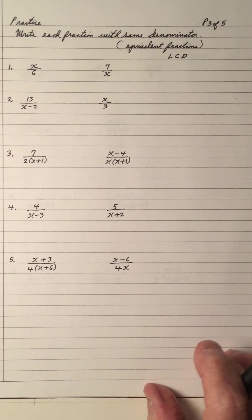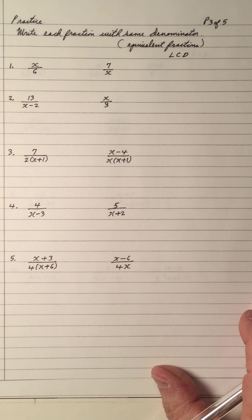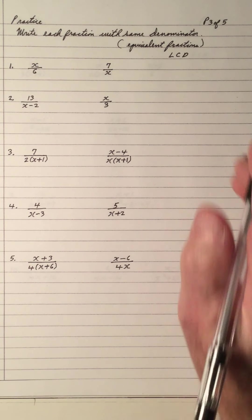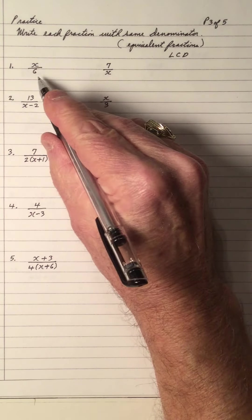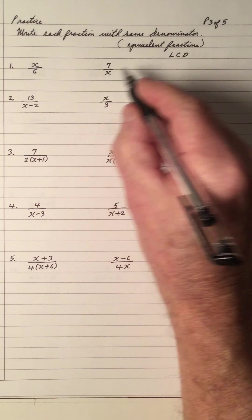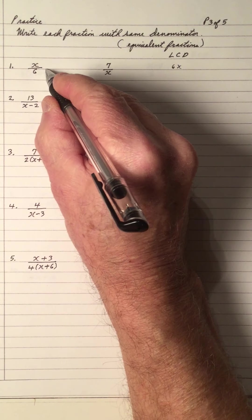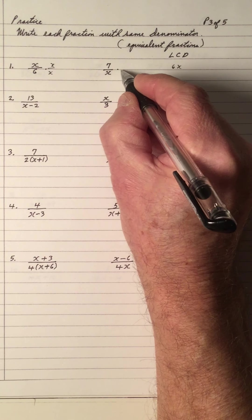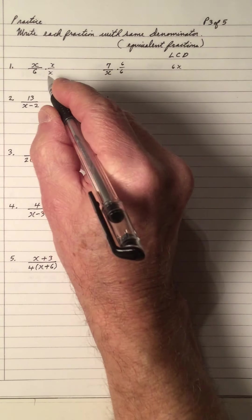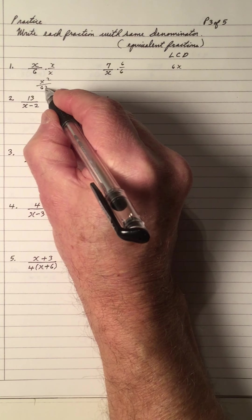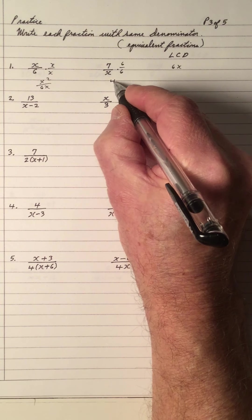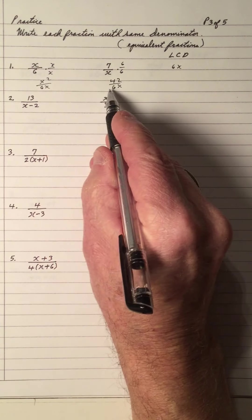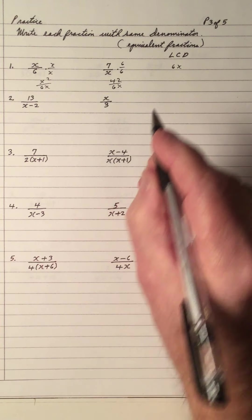Let's do some practice. Practice means pause the video and work out your answers, then press play to see if you're right — try them first. What's the LCD for 6 and x? The LCD is 6x. So we need to multiply this one by x over x, and this one by 6 over 6. That gives us x squared over 6x, and this one gives us 42 over 6x — perfect, same denominators.